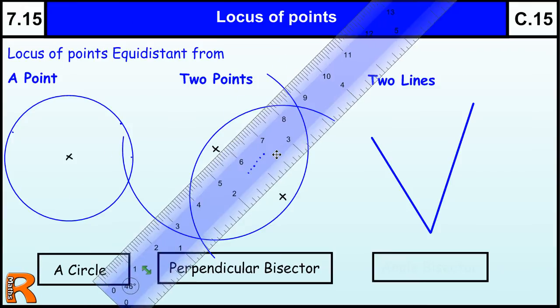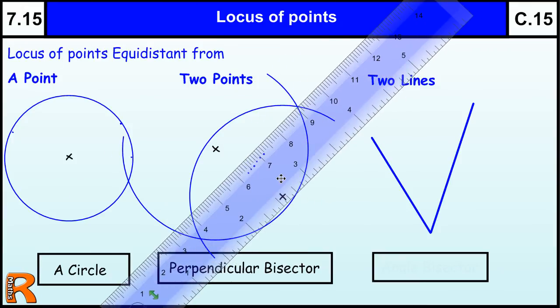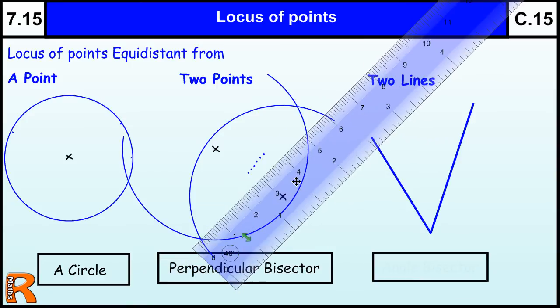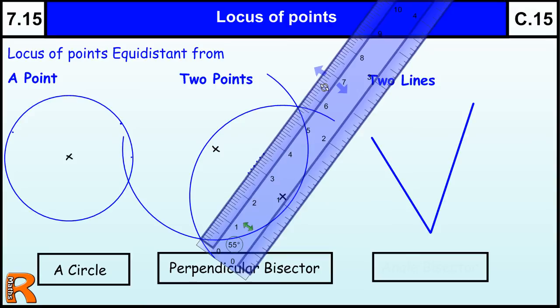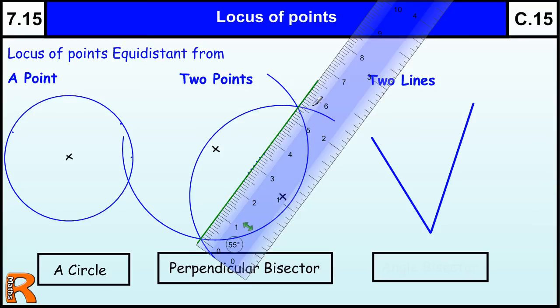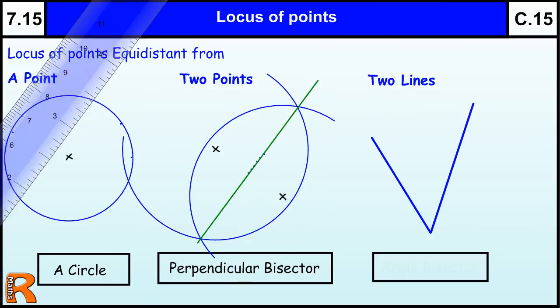And then, we can use a ruler to join those two points up, hopefully setting the ruler up to the right direction, there we go, and I'm going to use a green line for this. OK, so that line there is the line of all the points that are equidistant from both these points.